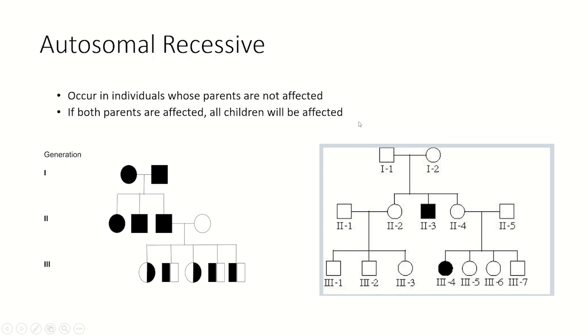For an autosomal recessive trait, I will have an affected individual with normal parents. And if both parents are affected, then all of the children should be affected.